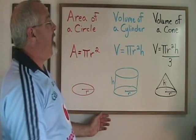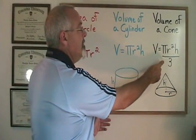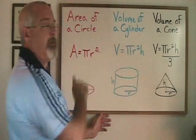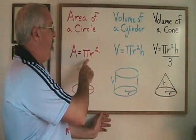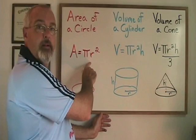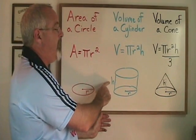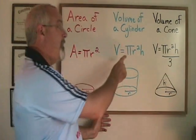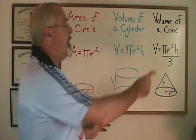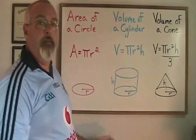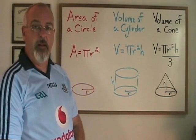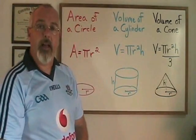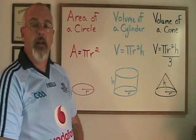Thanks to Archimedes, if we can remember a couple of simple facts about cones and cylinders, the area of a circle formula is the only one of these three formulas we have to have memorized. If we know the area of a circle formula, we can multiply it by the height to get the volume of a cylinder. And if we know the volume of a cylinder formula, we can divide it by three to get the volume of a cone with the same radius and height. Being able to produce these formulas during an exam without having to memorize them can be very useful.